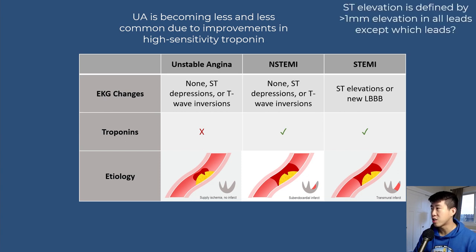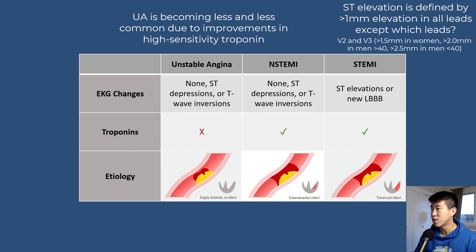ST elevation is defined by greater than one millimeter elevation in all leads except V2 and V3, which have a slightly higher threshold. In women, it needs to be greater than 1.5 millimeters. For men over 40, it has to be greater than two millimeters. For men under 40, it's greater than 2.5 millimeters.